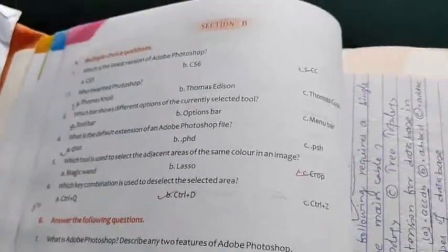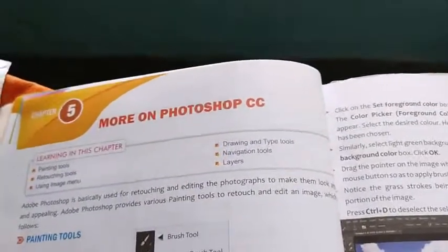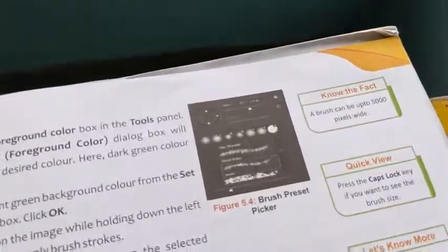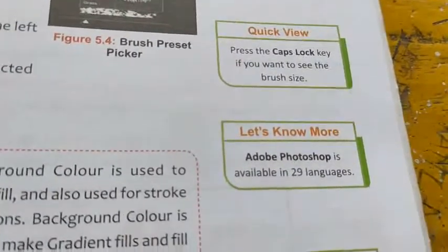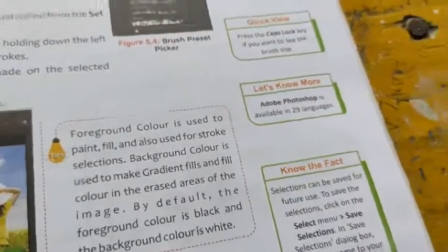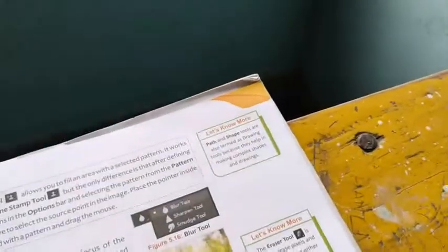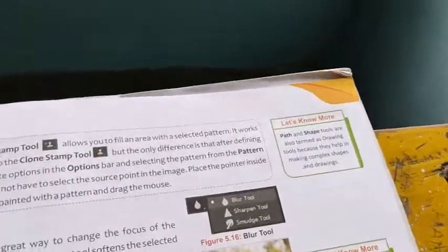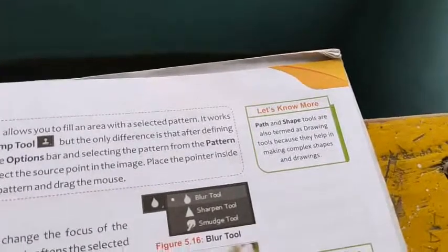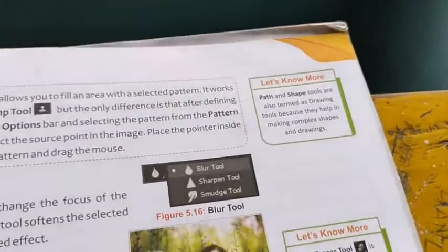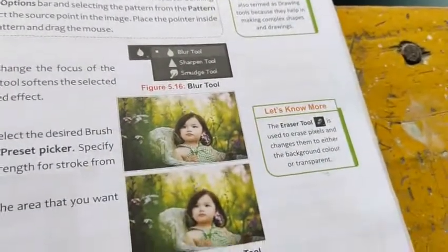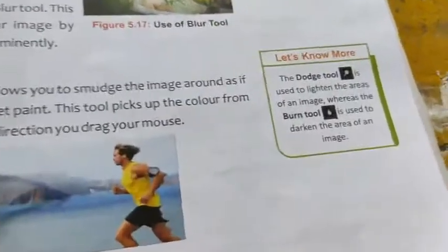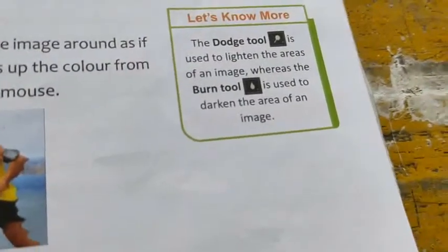Chapter 5: More on Photoshop CC. The brush can be up to 5000 pixels wide. Press the Caps Lock key to see the brush size. Adobe Photoshop is available in 29 languages. Path and shape tools are also termed drawing tools because they help in making complex shapes and drawings. The eraser tool is used to erase pixels and change them to either the background color or transparent.